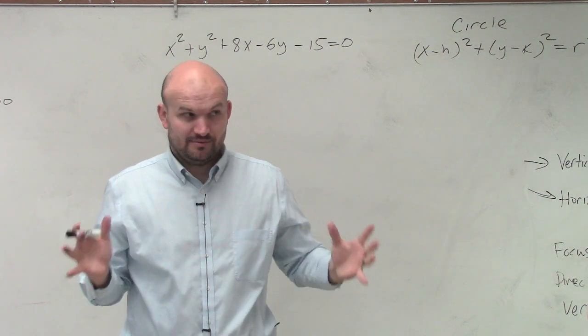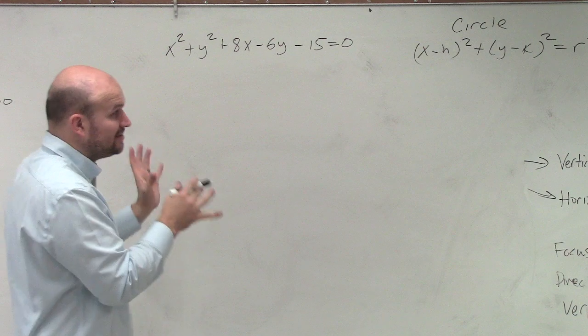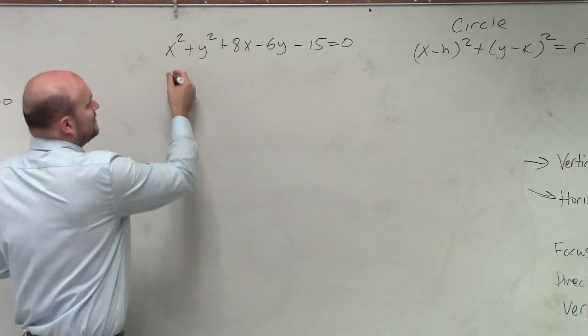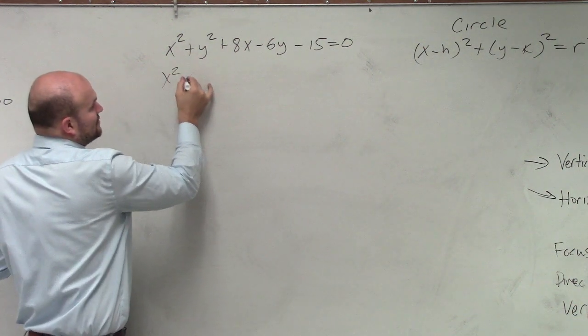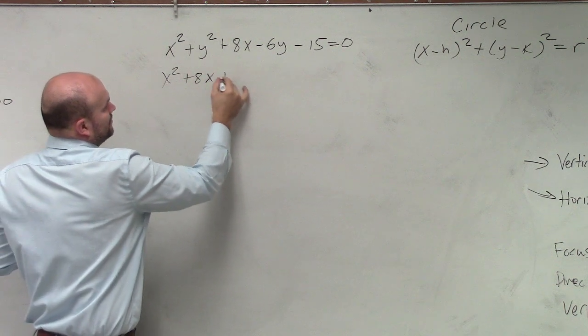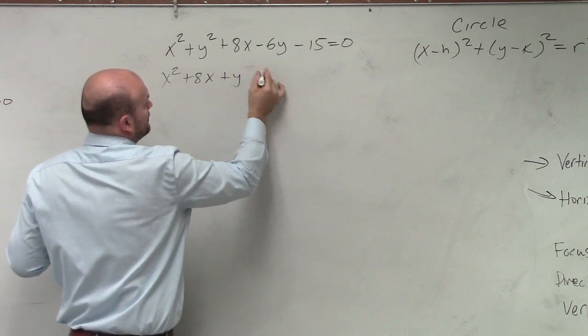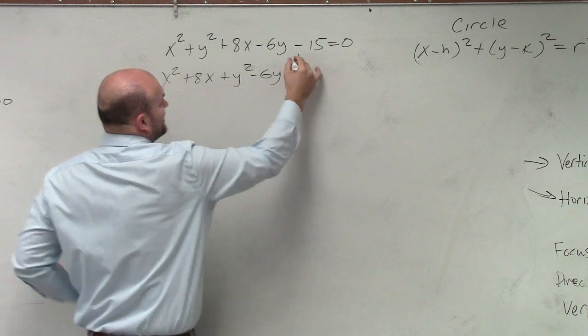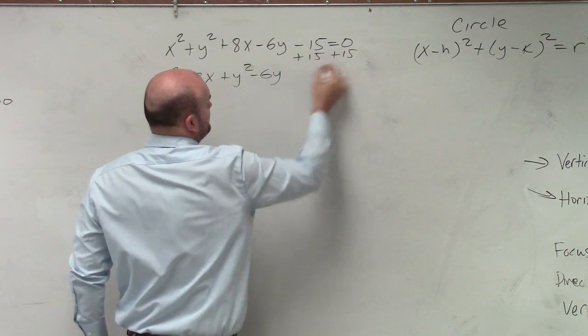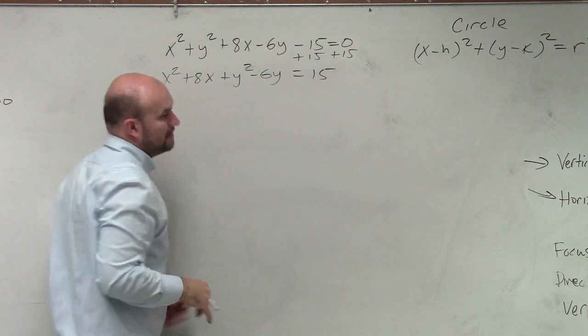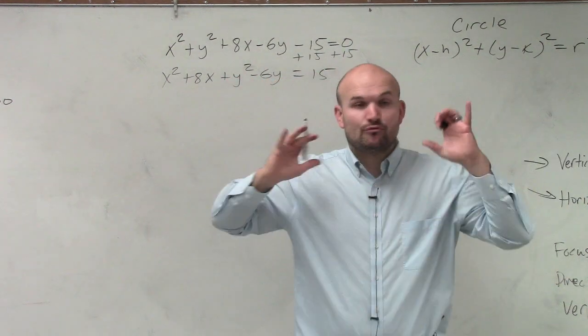Follow me, because this completing the square stuff is going to be assessed. Group the x's: x squared plus 8x plus y squared minus 6y. Then let's get the 15 to the other side. Does everybody see what I did? I just rearranged things.